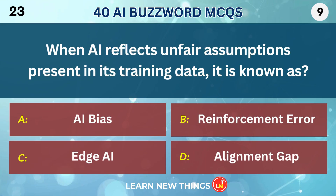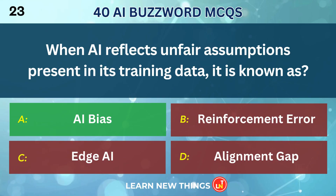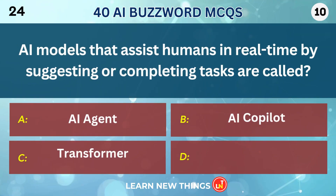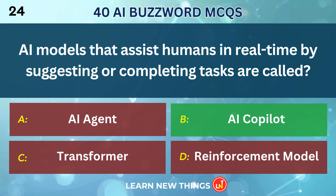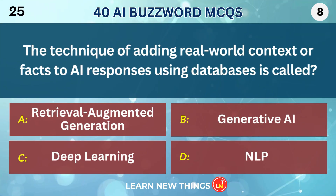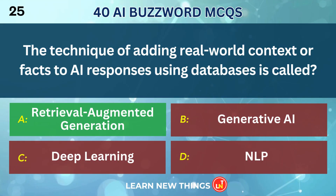When AI reflects unfair assumptions present in its training data, it is known as AI Bias. AI models that assist humans in real-time by suggesting or completing tasks are called AI Co-pilot. The technique of adding real-world context or facts to AI responses using databases is called Retrieval Augmented Generation.